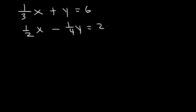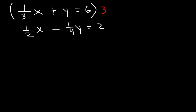Whenever you have fractions, you can make the process a lot easier if you try to clear away all fractions. In the first equation, let's multiply everything by 3. One-third x times 3 is basically 1x. One-third times 3 is the same as 3 divided by 3, which is 1, so we just get x. And then 3 times y is 3y. And then 6 times 3 is 18.